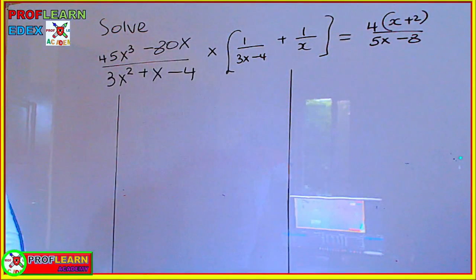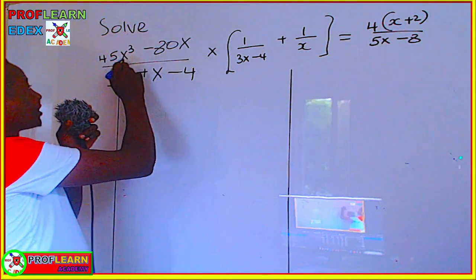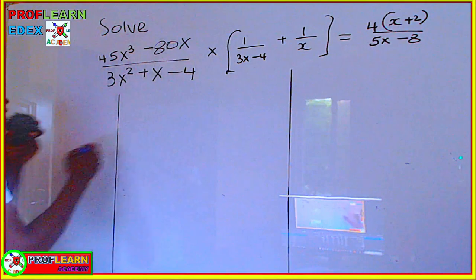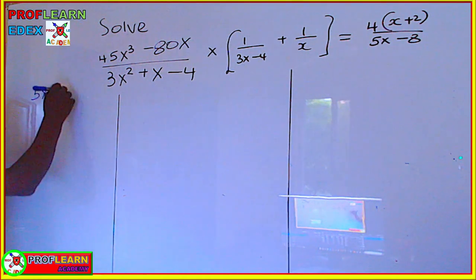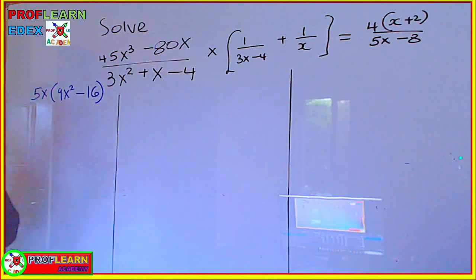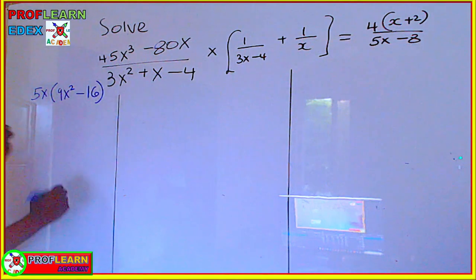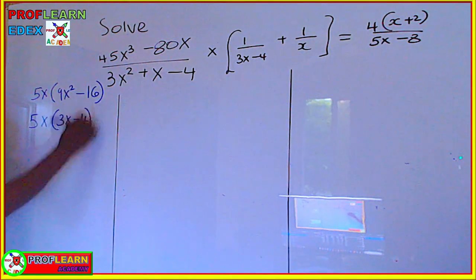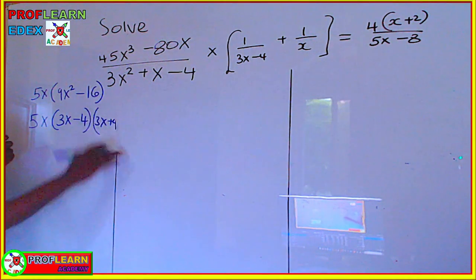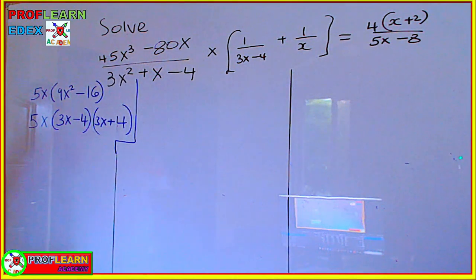The first part I want us to look at is the numerator. We are going to factor out 5x so that we can simplify it. Factoring out 5x, we remain with 9x squared minus 16, which is a difference of two squares. This further simplifies to 5x times (3x minus 4) times (3x plus 4).